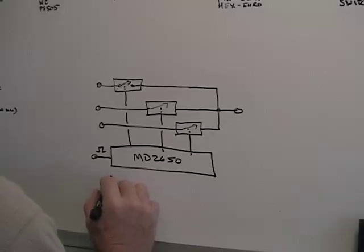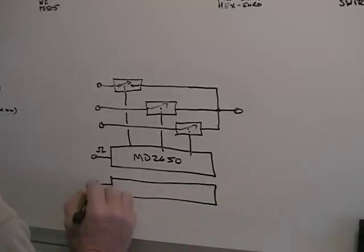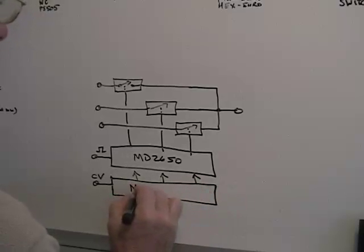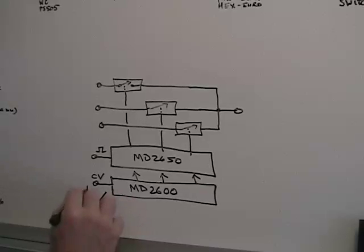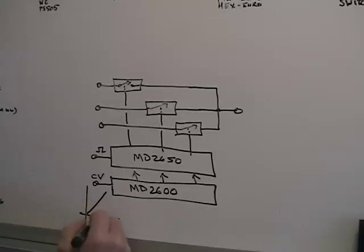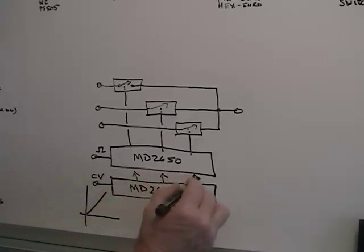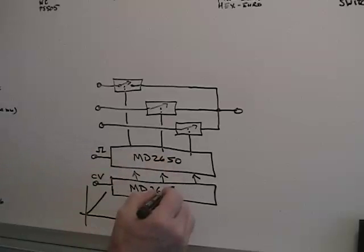Now for the scanner, you have a slightly different setup. You have a CV, a control voltage, and that controls the three switches. This is the MD-2600 scanner. So as a control voltage rises, it switches on switches in succession.